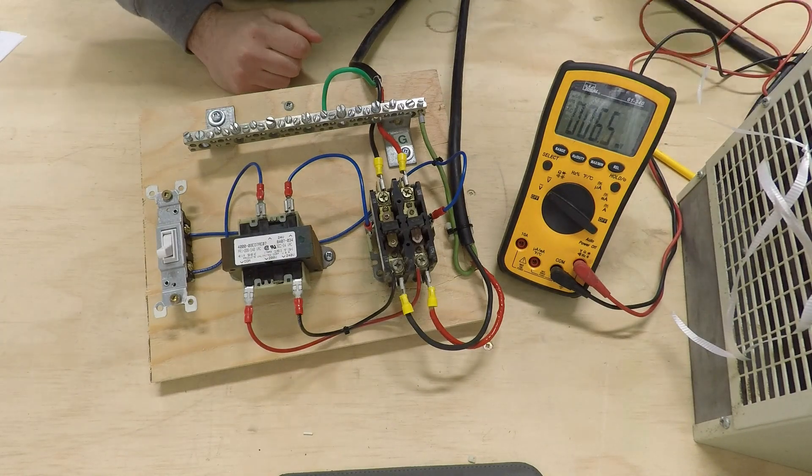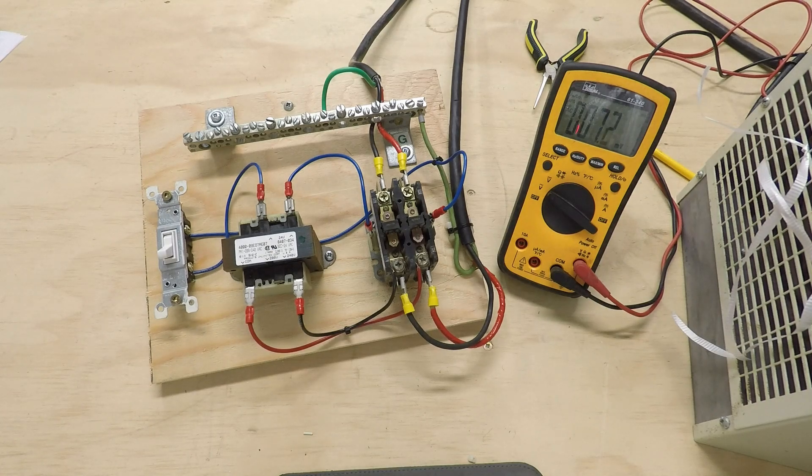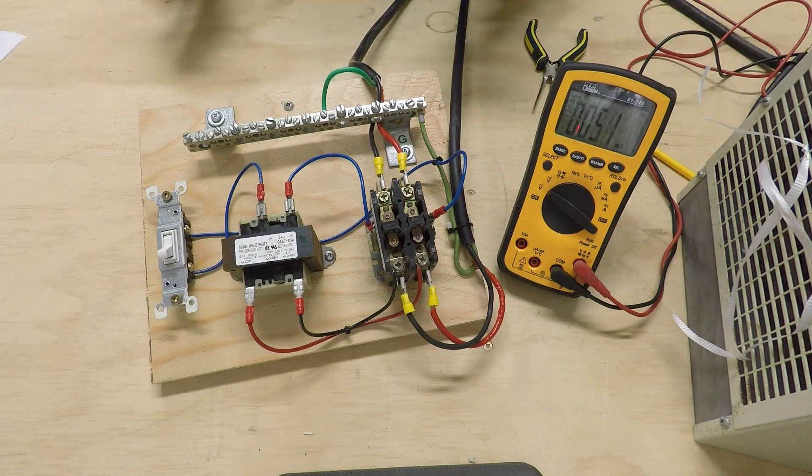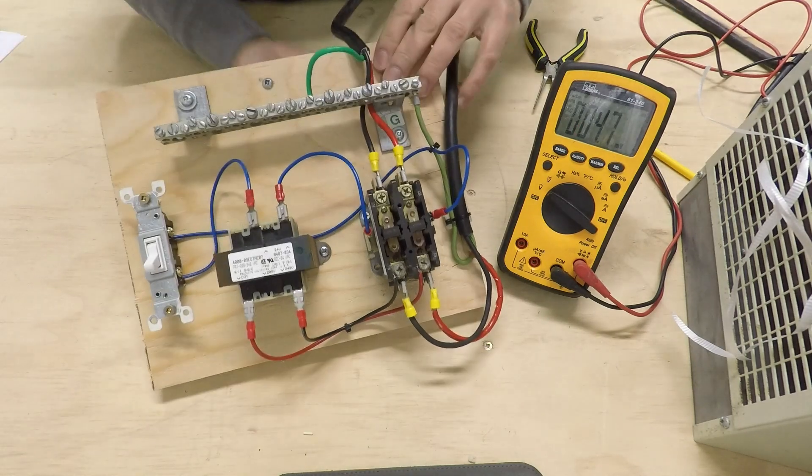So here's what you can do. You can take some needle nose and maybe a small slot driver. And the way these contactors work, there's actually spring-loaded contact surfaces in here. I'm not sure if you can see it, but I'll see if I can show you it.